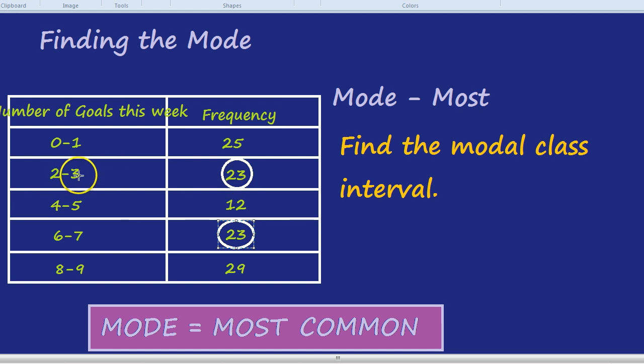It was 2 to 3 goals that came up 23 times. It was 6 to 7 goals that came up 23 times. But they weren't the most common. Which number of goals came up the most? It was 8 to 9, because 8 to 9 goals came up 29 times.